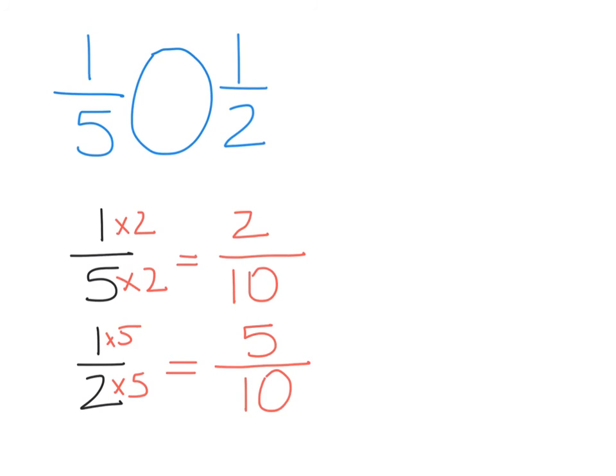Now when I look at these two, I have five-tenths and two-tenths. Thinking about five-tenths and two-tenths, which one is greater? Yes, five-tenths has five out of ten pieces. That means that this fraction, which was the one-half, is going to be greater. And that means that one-fifth is less than one-half.